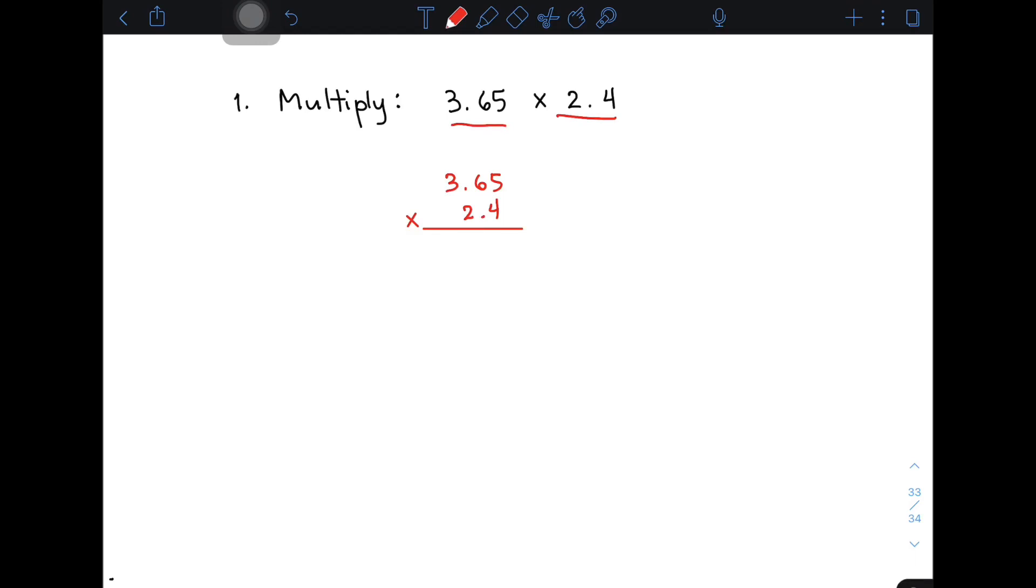How are we going to multiply 3.65 times 2.4? Here's the tip: imagine that you're multiplying whole numbers. You need to ignore the decimal places first. Imagine that you're just multiplying 365 by 24.